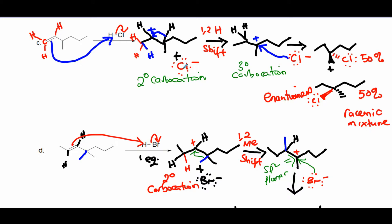The secondary carbocation is not as stable as it can be, so we need to move a group. Look to the most substituted carbon neighboring the carbocation C+. The neighboring carbons are examined, and the most substituted one — with fewer hydrogens — is identified as the source for the shift. To get the most stable carbocation, you move a group from that most substituted neighboring carbon bonded to C+.